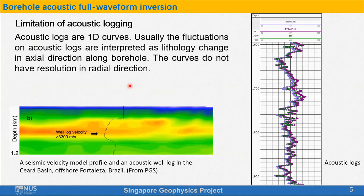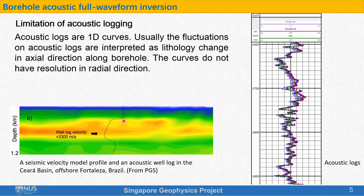Acoustic logs are results of acoustic logging. The logs are always 1D curves. Usually, the fluctuations on acoustic logs are interpreted as lithology change along the borehole. However, the curves cannot tell velocity change away from the borehole. In other words, the acoustic logs only have resolution in the axial direction, but they do not have resolution in the radial direction.